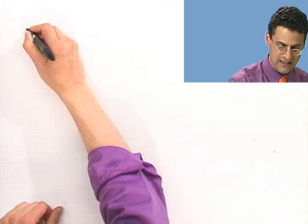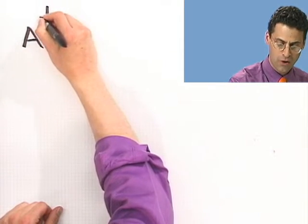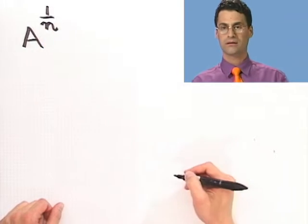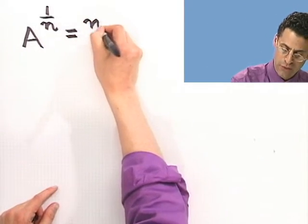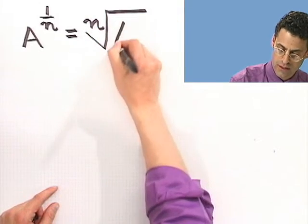So let's take a look now at this thing in general. What we have here is the following. If I take A and I raise it to the 1 over n power, what that means is I'm taking the nth root of A.